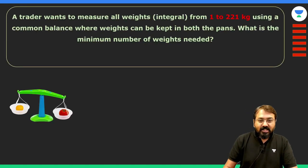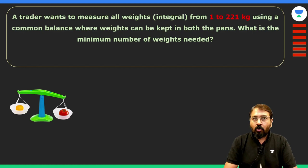The situation is something like this: a trader wants to measure all the weights, that is integer values from 1 kg to 221 kg, using a common balance where weights can be kept on either side of the pans, wherever you want.